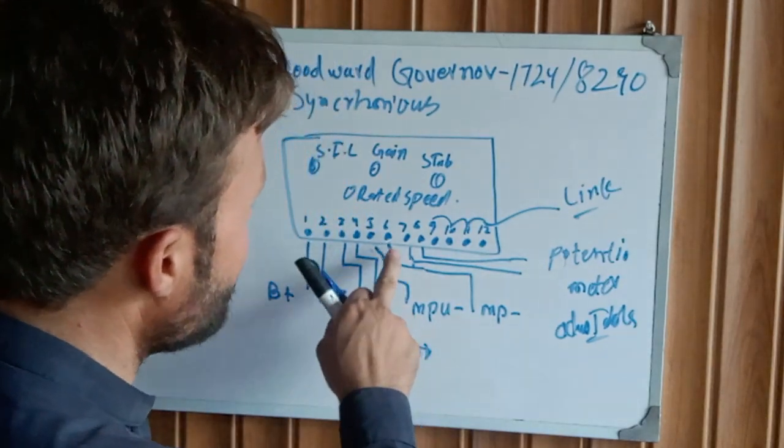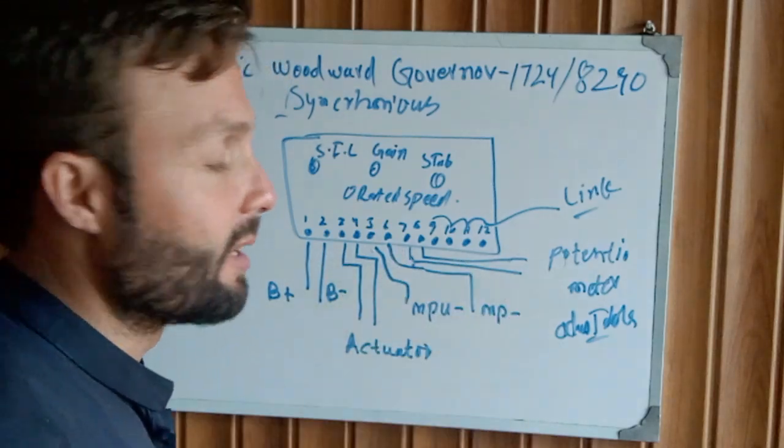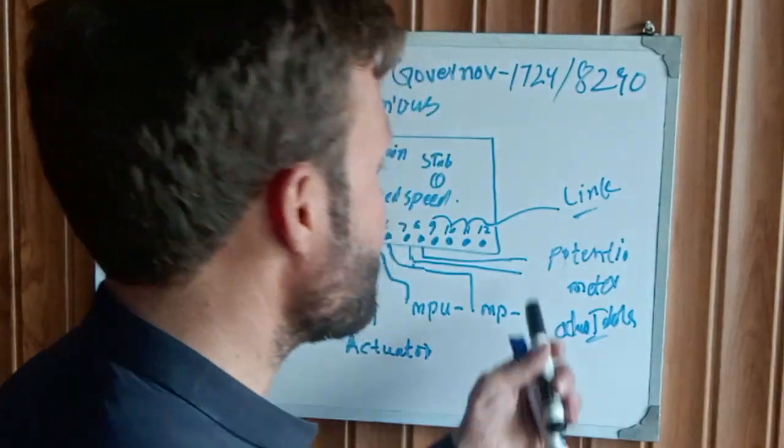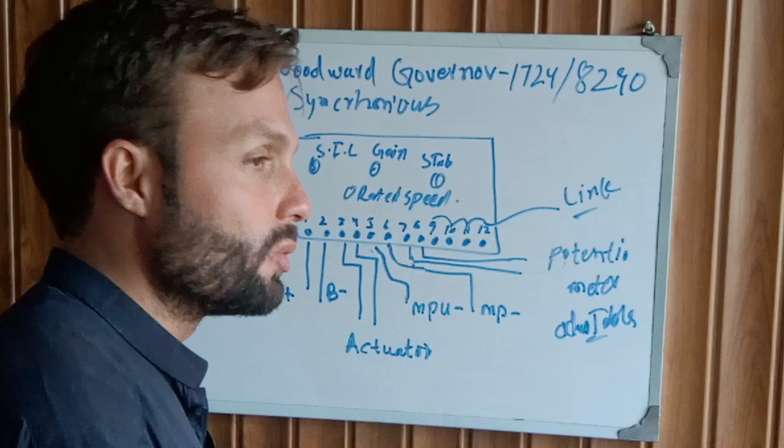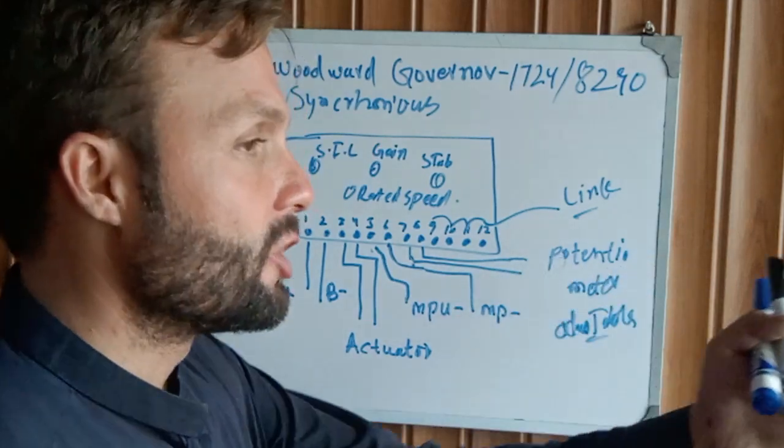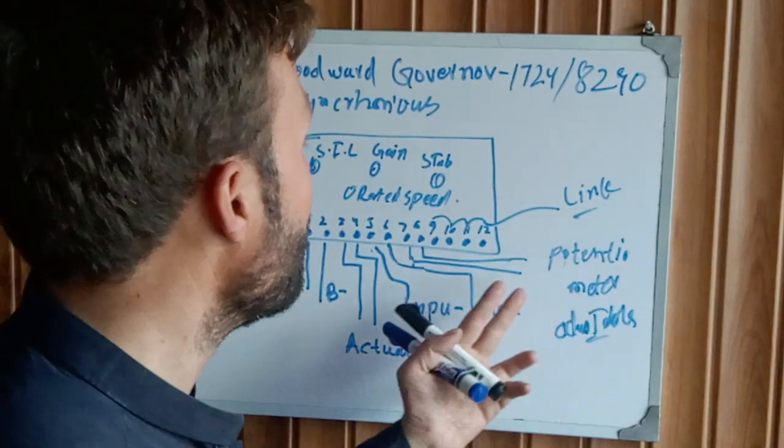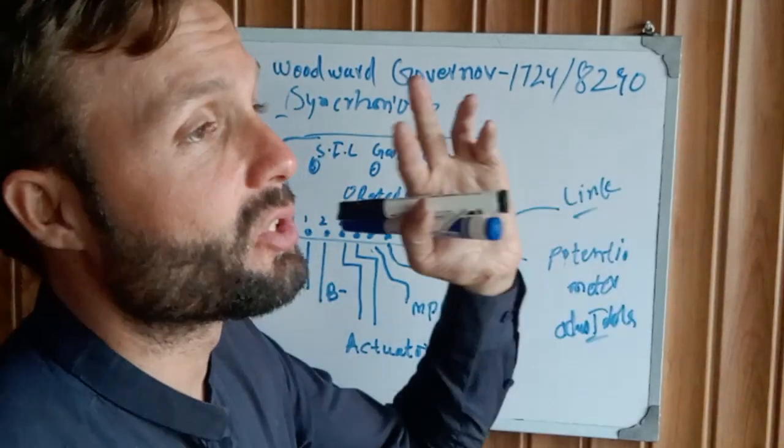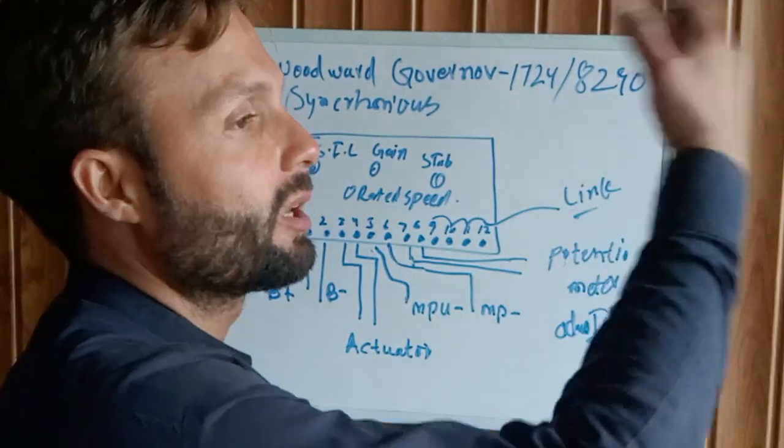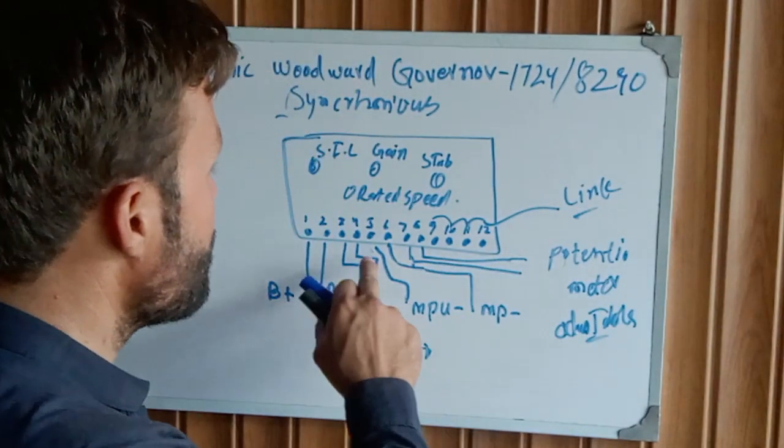Terminals 7 and 8 are for potentiometer supply. This is the potentiometer - if your generator is far away, you can take two control wires to your control room and install the potentiometer. You can increase and decrease the generator voltage from your control room far away.